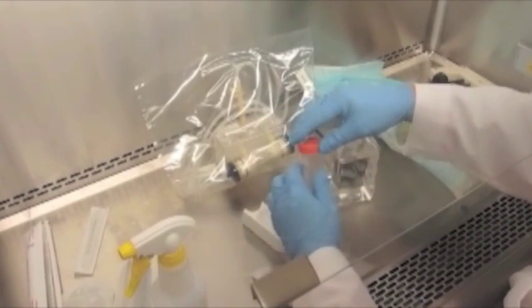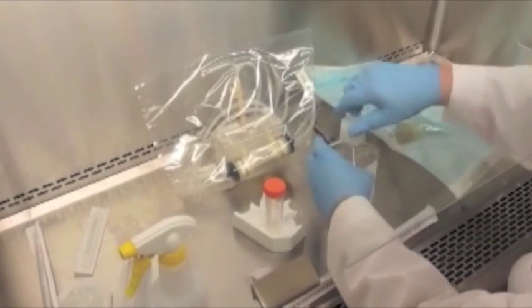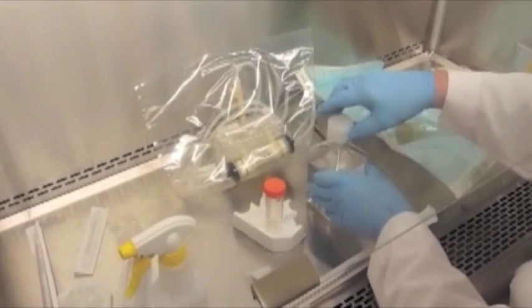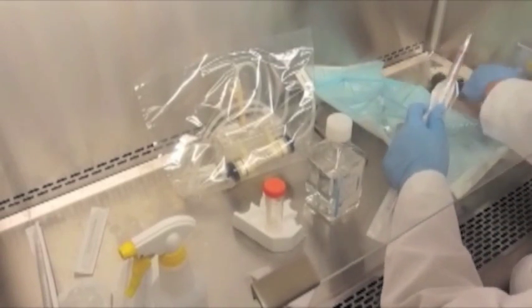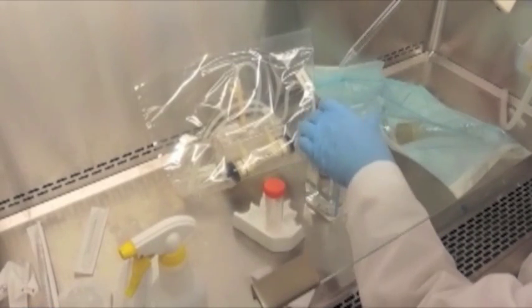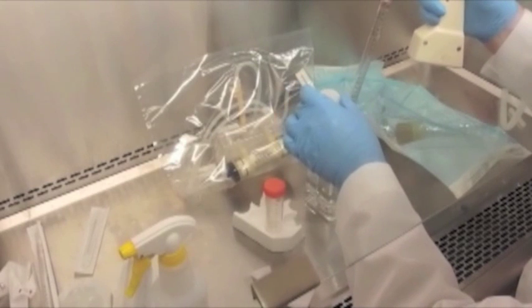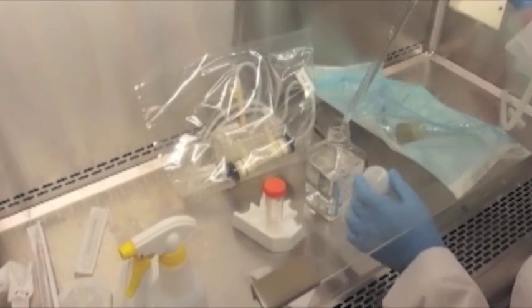We're going to prepare 50 ml of PBS in our conical centrifuge tube in order to fill the extracapillary space with it after we attach the cartridge to the bottle of PBS. We found that PBS is a little more effective at removing the PVP than straight cell culture media.